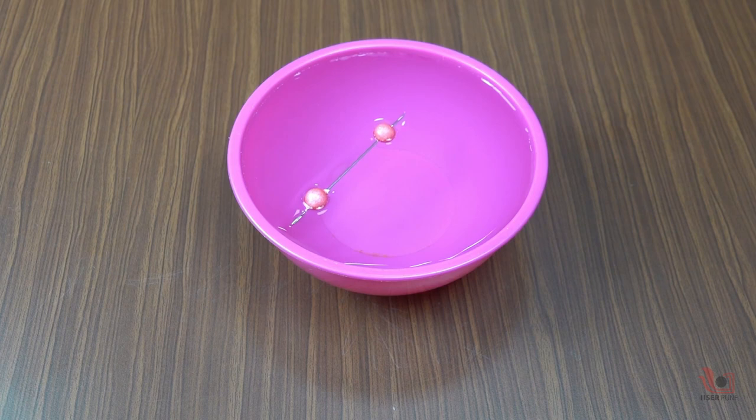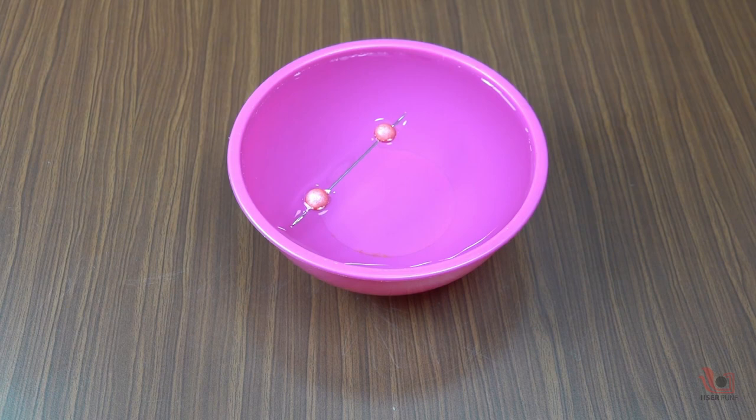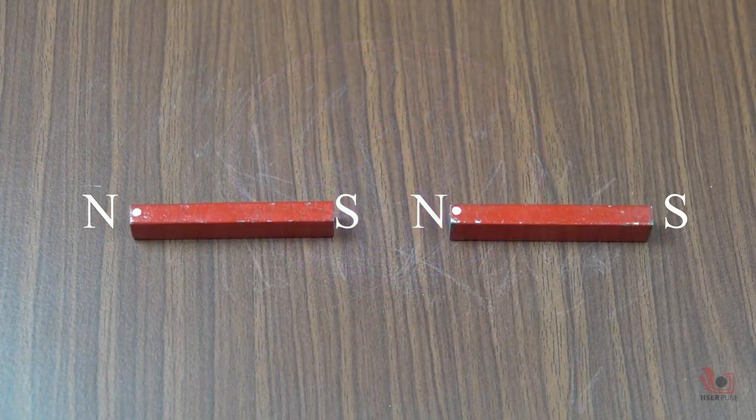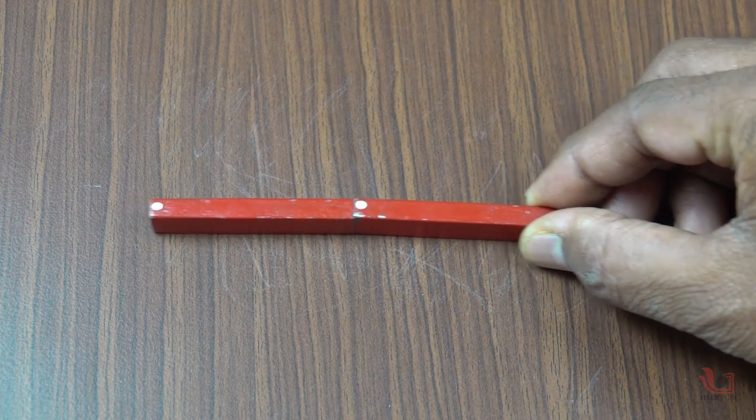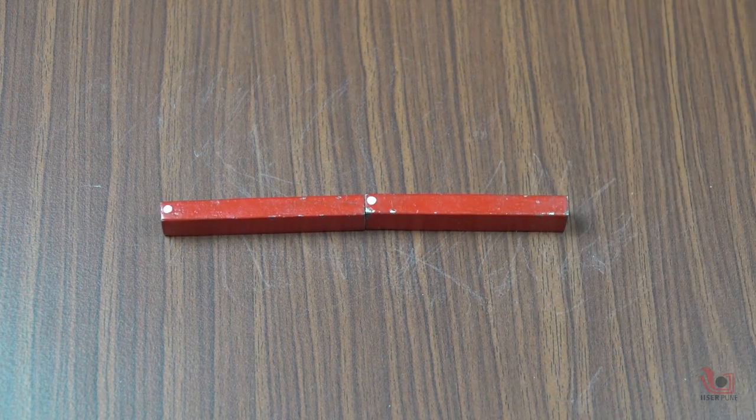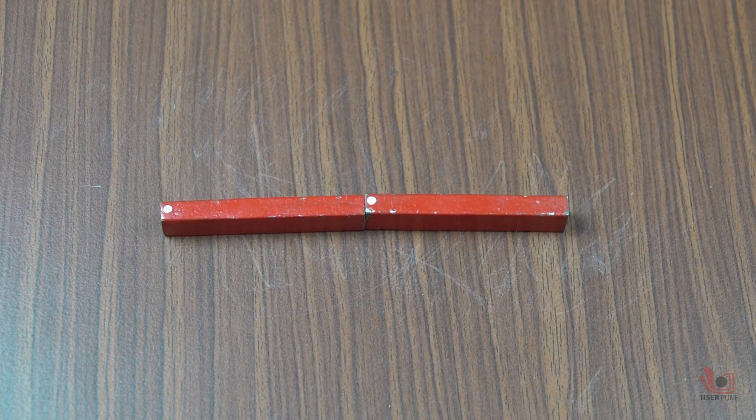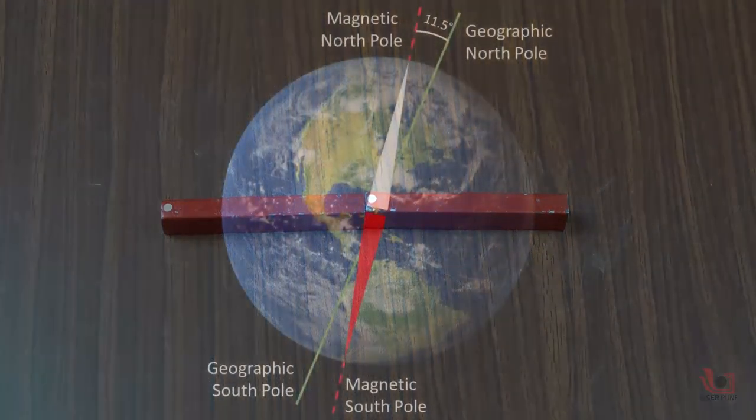Then the question will come to your mind, why does the magnetic needle show the north and south directions? As we know, all magnets have two poles, a north pole and a south pole. The north pole of one magnet is attracted to the south pole of another magnet and vice versa.